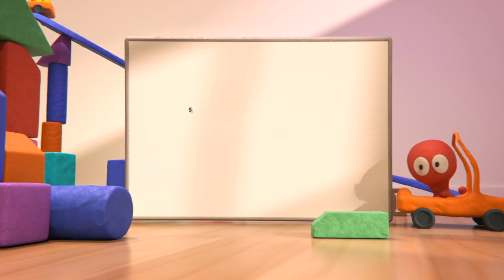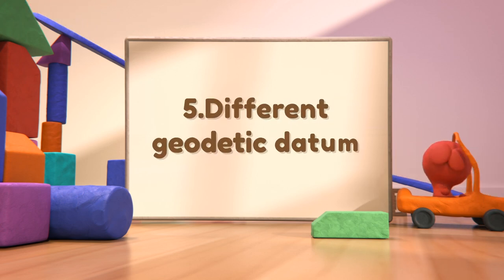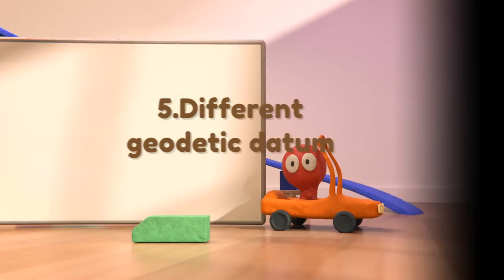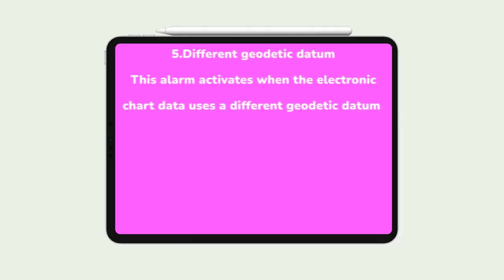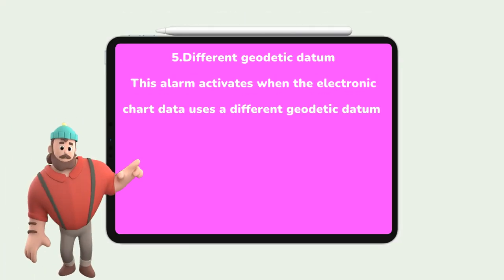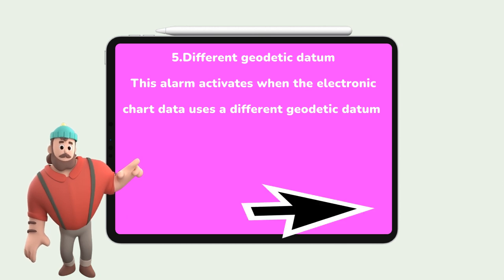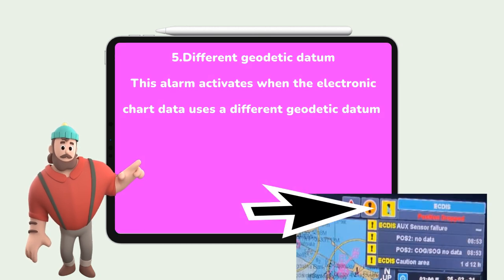5. Different Geodetic Data. This alarm activates when the electronic chart data uses a different geodetic data reference system compared to the one used by the positioning system.